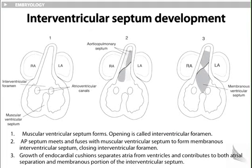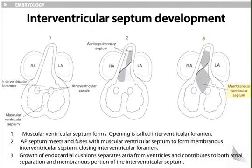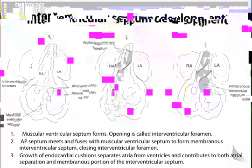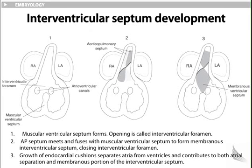Let's take a look at the illustrations and find out what the development is. Number one: right atrium, left atrium, interventricular foramen, and the atrioventricular canals — there is a muscular ventricular septum. Number two: the spiraling we spoke of earlier. Number three: membranous ventricular septum develops. In summary: the muscular ventricular septum forms and the opening is called the interventricular foramen. The aorticopulmonary septum meets and fuses with the muscular ventricular septum to form the membranous interventricular septum, closing the interventricular foramen. Growth of endocardial cushions separates the atria from ventricles and contributes to both atrial separation and the membranous portion of the interventricular septum.